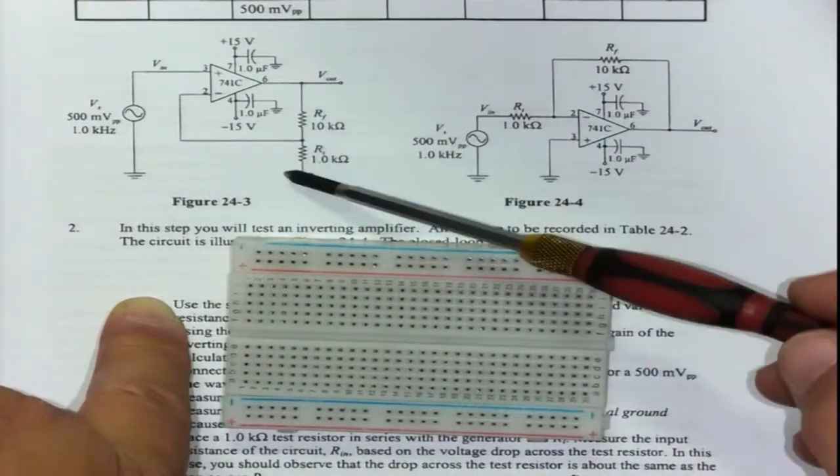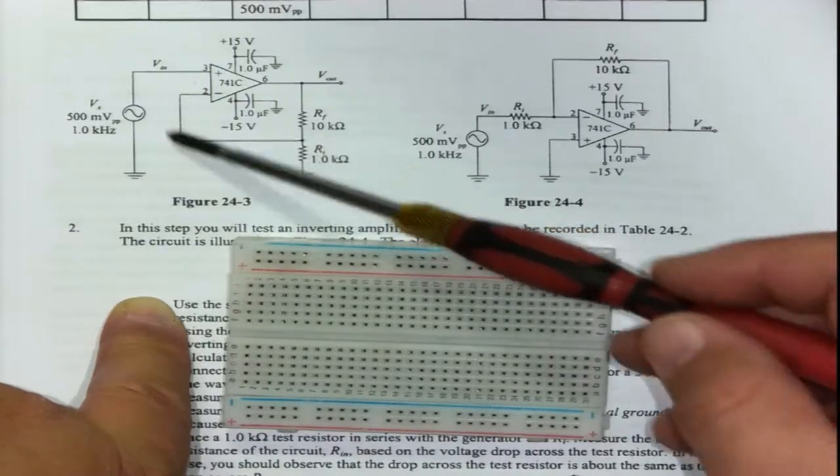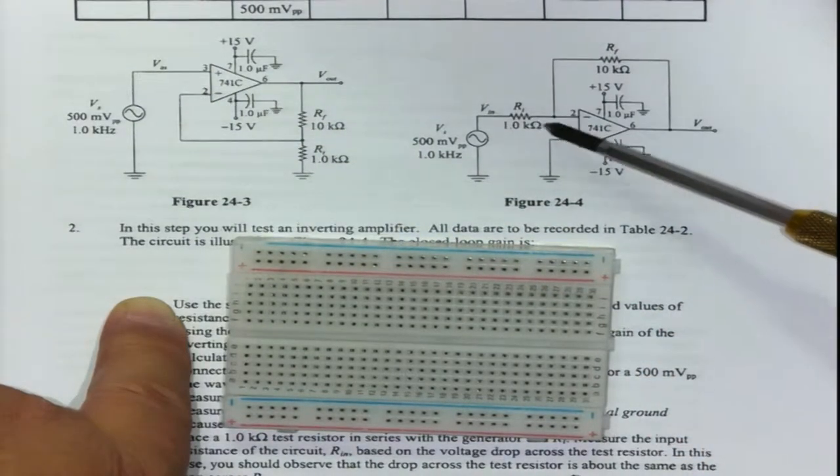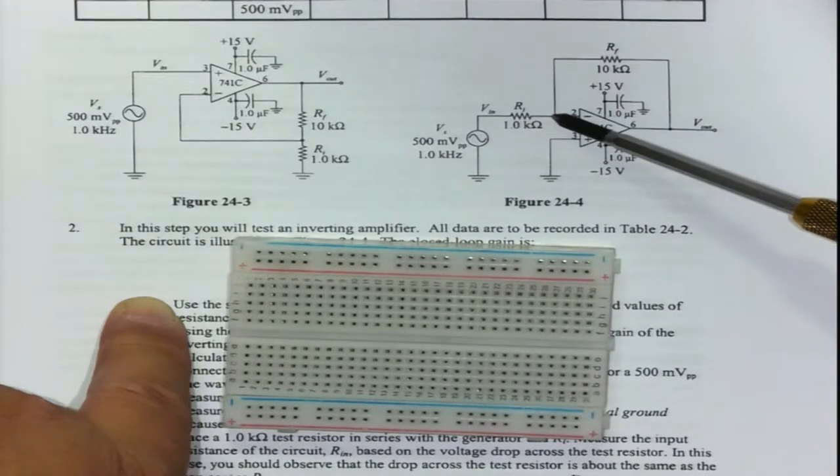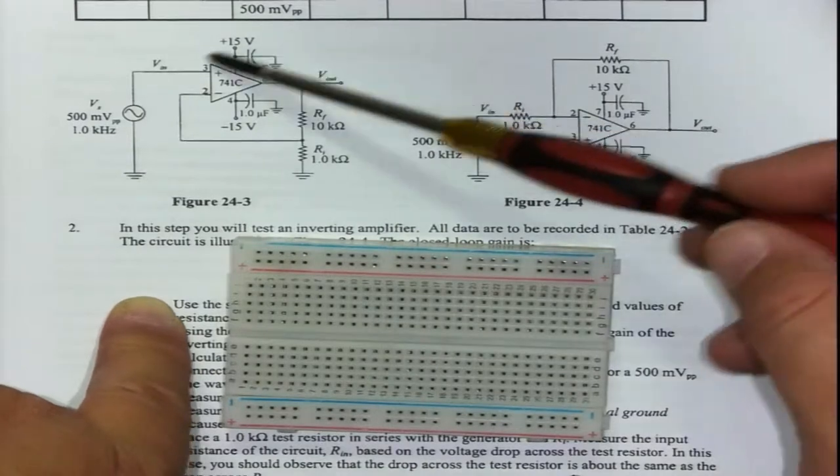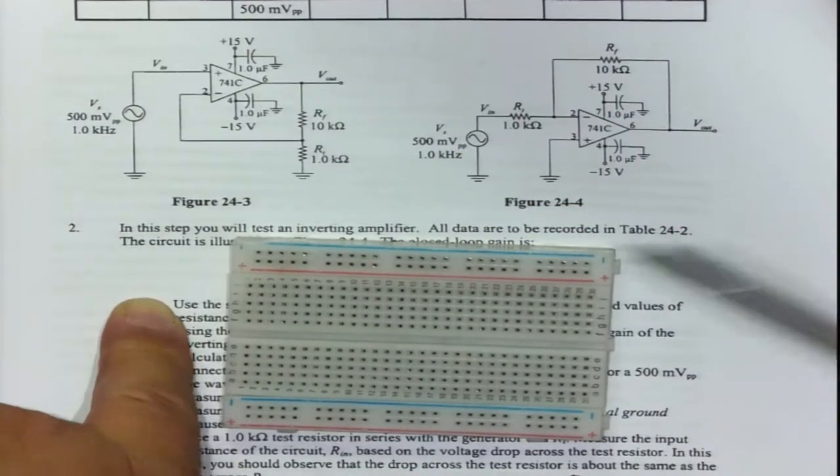The feedback resistor here is a shared voltage divider going there. On this side, no voltage divider, just simply going back with the input resistance straight from the signal generator. We're focusing on how to construct the circuit on a breadboard.